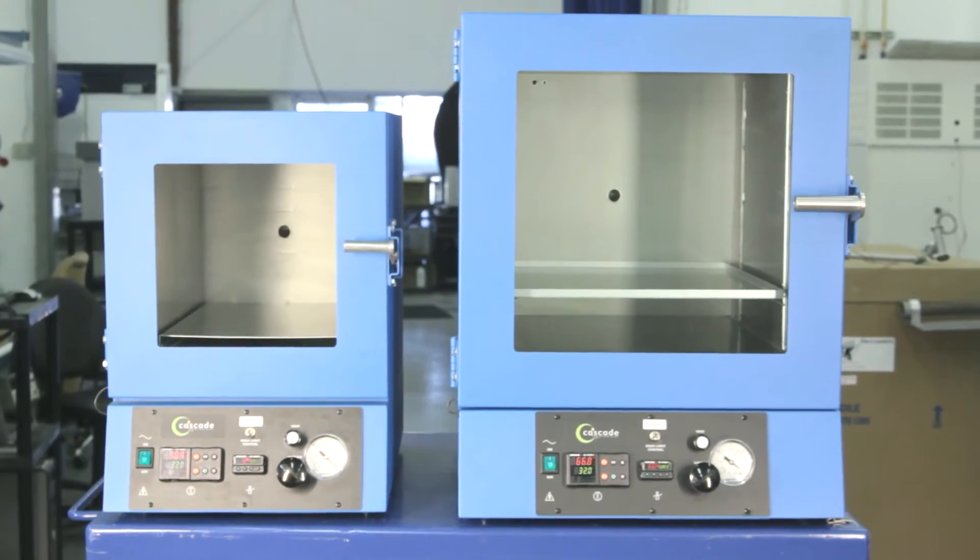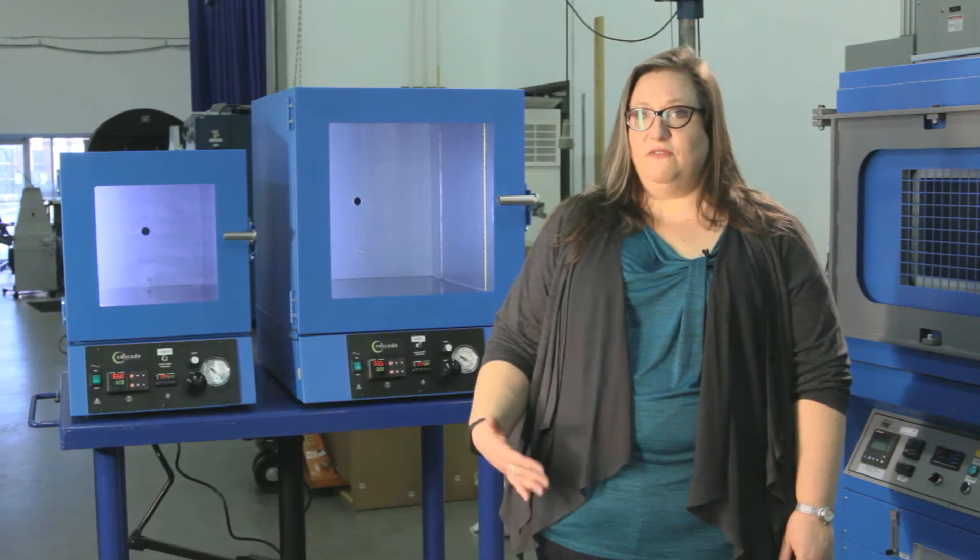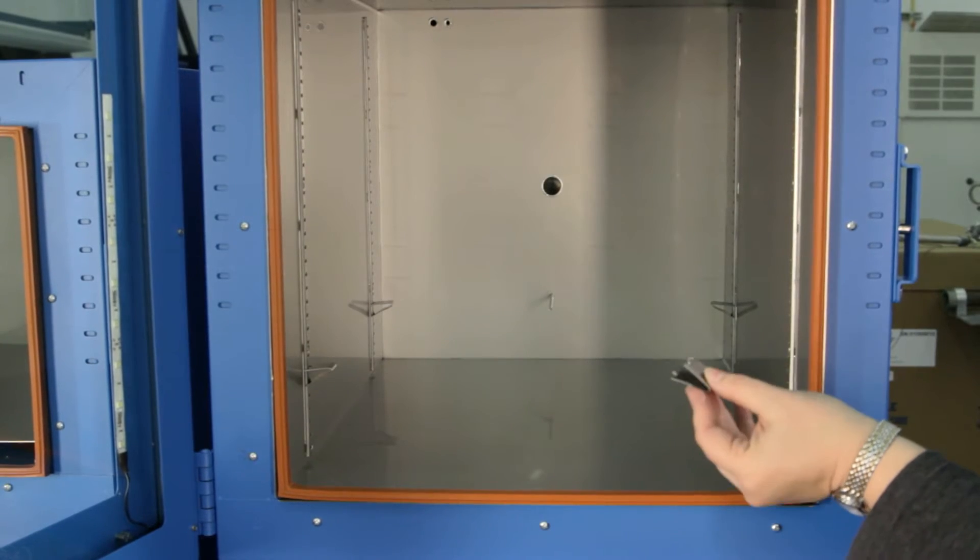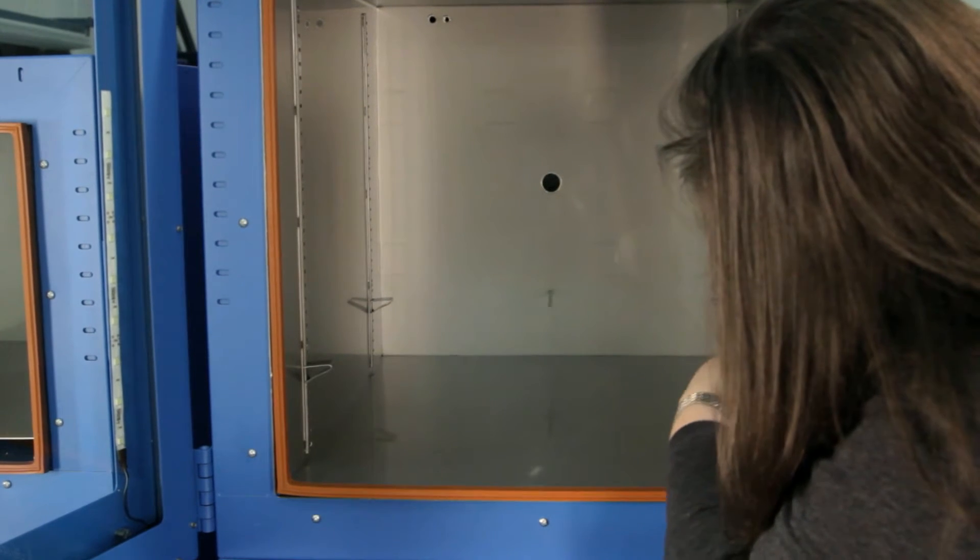The first thing you'll notice once you have your oven in place and ready to install is that there's a temperature probe that extends quite a ways into the chamber. This is part of the design of the oven, very intentional and very important. So the first thing that you're going to want to do is install the bottom shelf directly over that temperature probe.